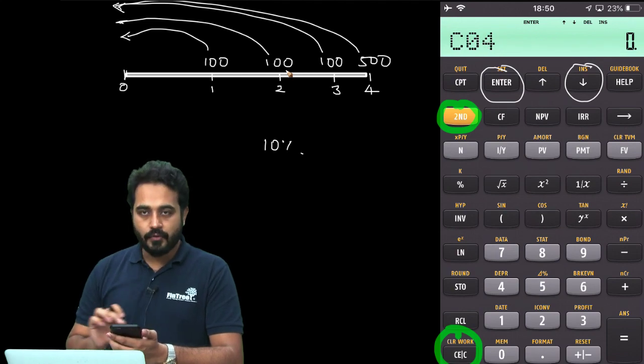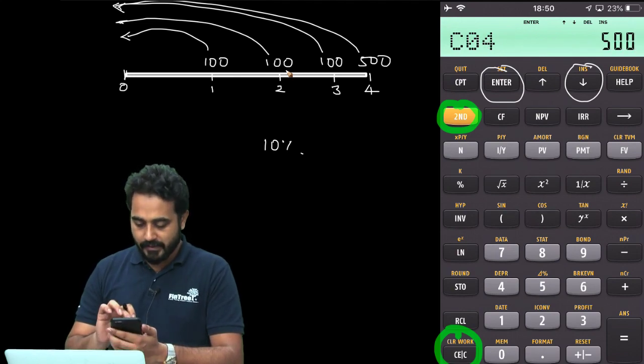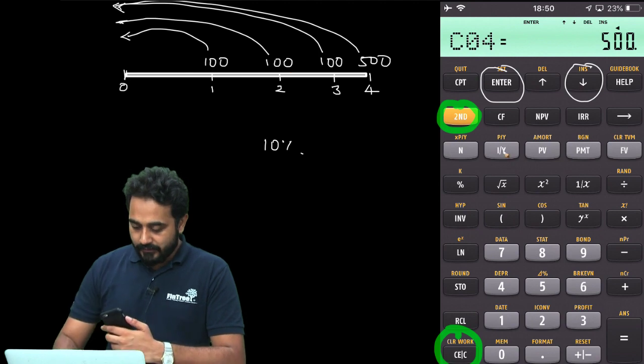Downward arrow twice, it shows cash flow 4, that is 500 this time, enter. Once I have done that, then I will hit the NPV button.